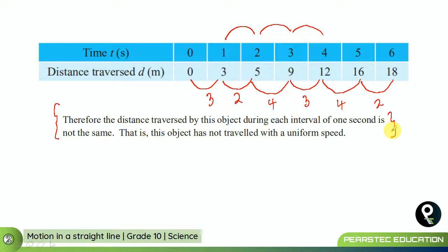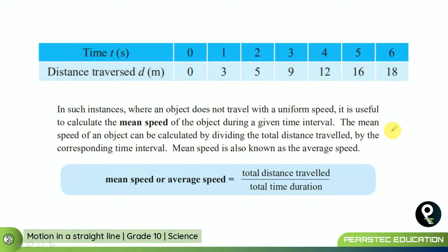So, you cannot just put the speed for this particular equation. Therefore, in a time like that, what they do is they take something called mean speed or average speed. You can see the same equation. We are still talking about the same chart. So, this has no equal difference between each time interval, like 3, 2, 4, 3, 4, and 2.